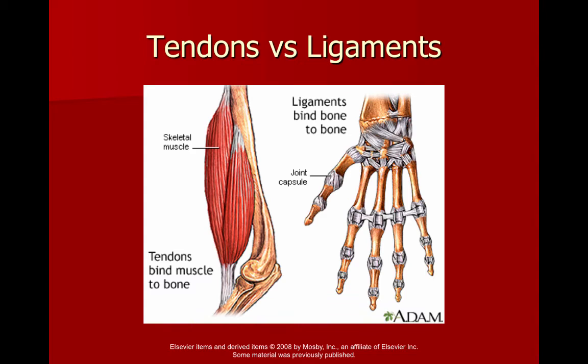Now we're moving forward: tendons versus ligaments. You have to know the difference forever. Ligaments are always bone to bone. Tendons are always muscle to bone.